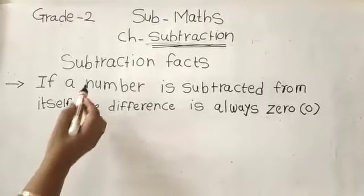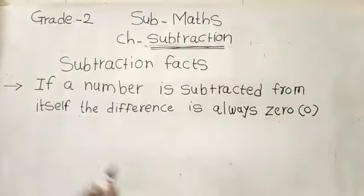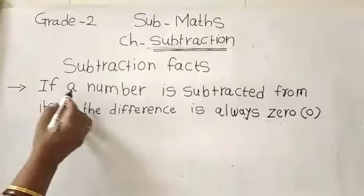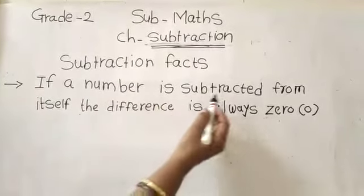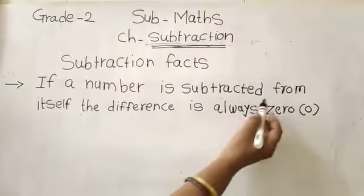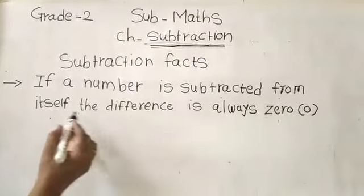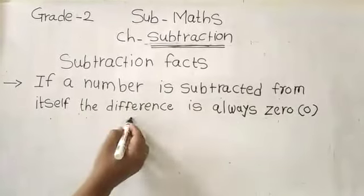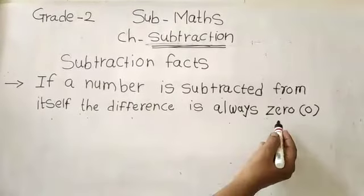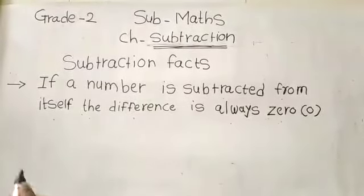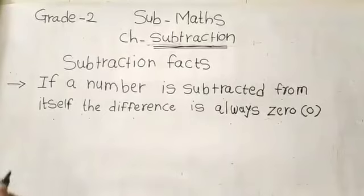Let's see another subtraction fact. If a number is subtracted from itself, the difference is always zero. Let's see with an example.